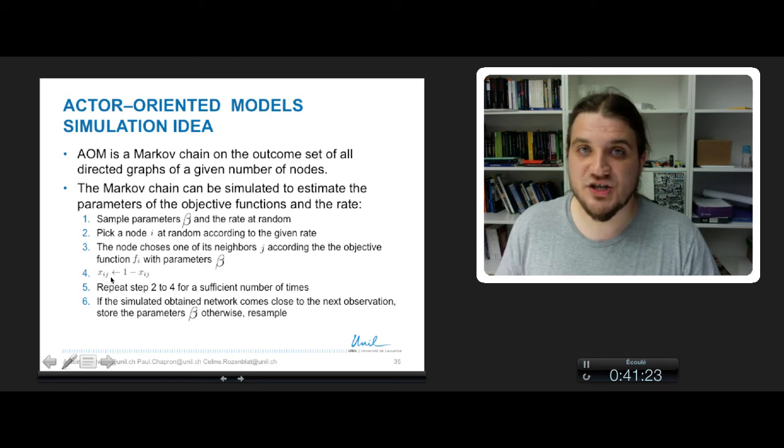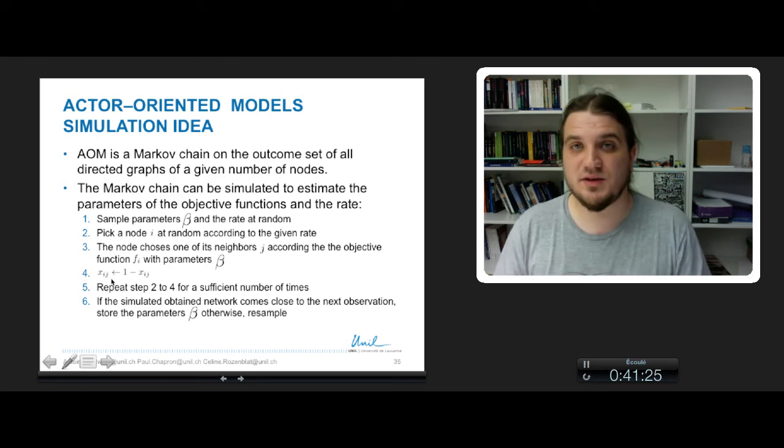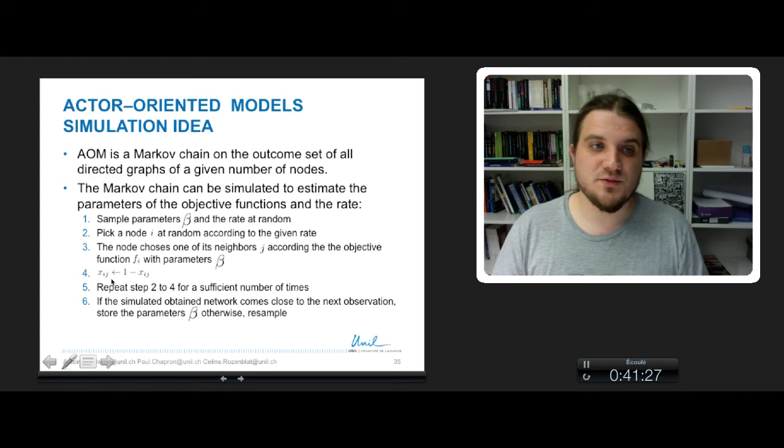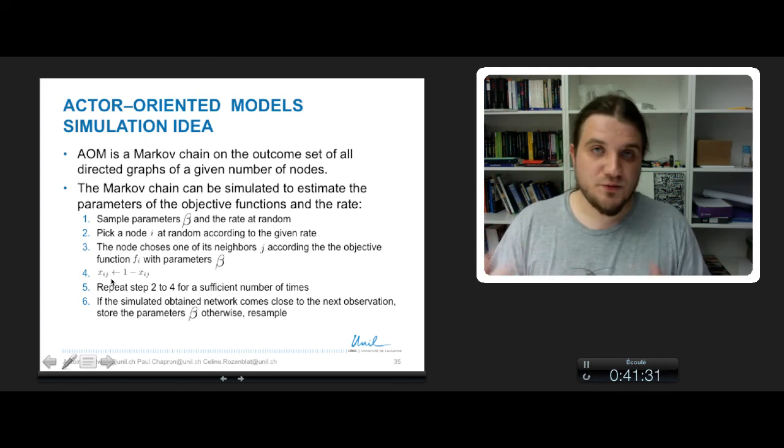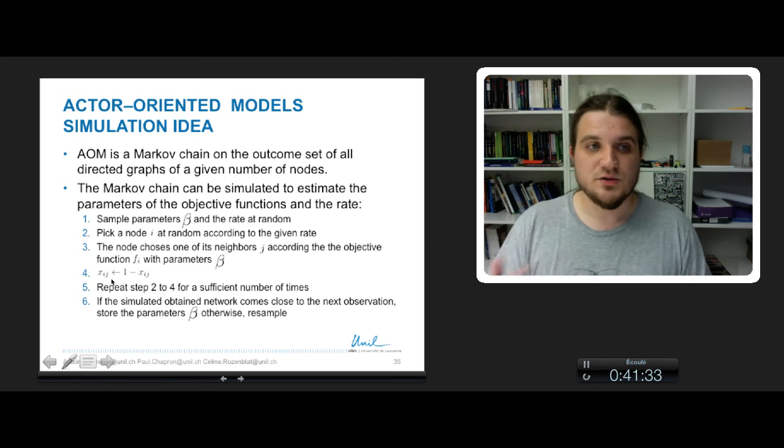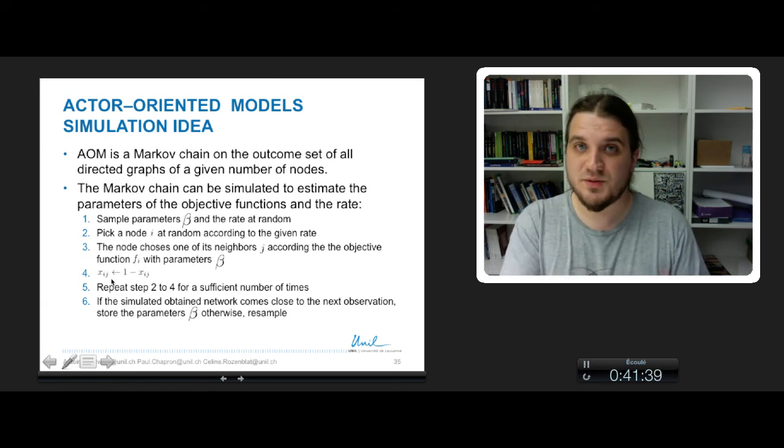The link between I and J is changed, so if it was 0 it becomes 1, and if it was 1 it becomes 0. You do that for every node and every link, so a sufficient number of times for the networks are supposed to be sufficiently changed according to the objective function.